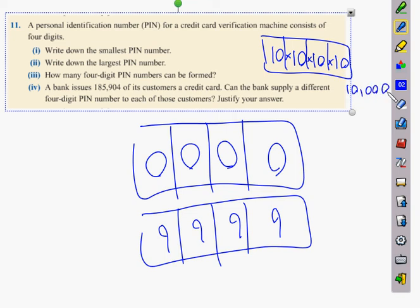Now, a bank issues 185,904 customers a credit card. Can the bank supply a different four-digit PIN number to each of those customers? Justify your answer. The answer is no. We only have 10,000 available to us. So therefore, we cannot offer a different PIN code for each one. Now, would anybody in the world love to have the code 0-0-0-0? They wouldn't feel safe with it.